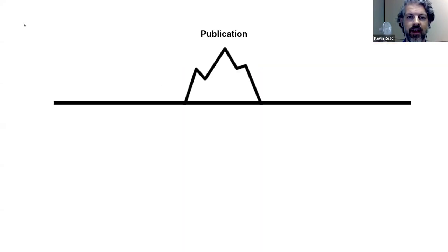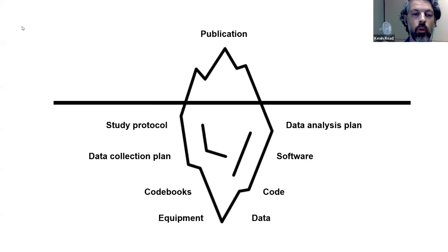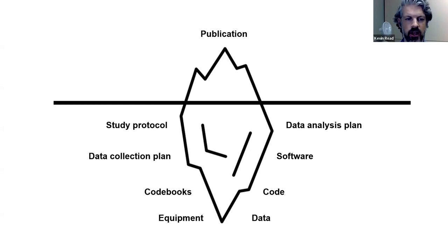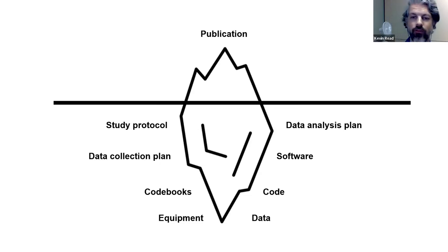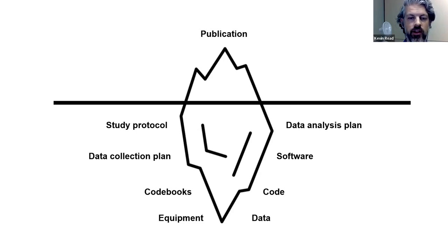Open scholarship means that everything at every stage of the research life cycle is open and remains open, so others can see the full scope and breadth of what our research entails. Rather than just the publication at the top of the iceberg, we need all the other elements — study protocols, software, equipment, archives — to come to the forefront, giving us a much better picture of research overall.